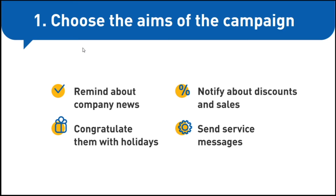Firstly, you need to choose the aims of the campaign. You may want to notify clients about something, congratulate them, remind them of something, or confirm an action they did. For example, you can notify them about sales, or send service messages confirming registration or sending order status. This influences the type of messages you send — promo, trigger, or service texts that need integration with your app, website, CRM, or everything at once. So set your goals.